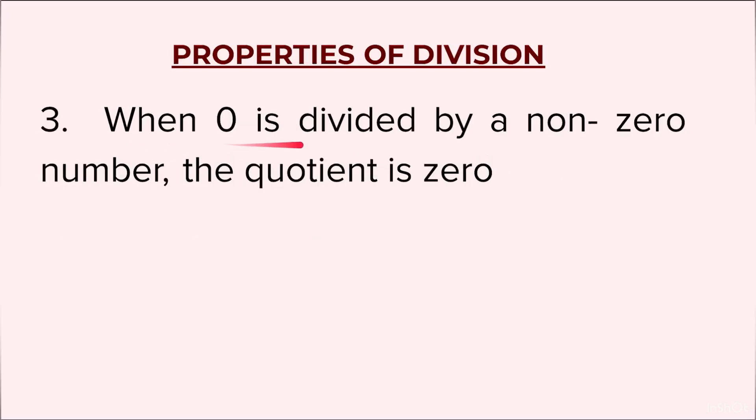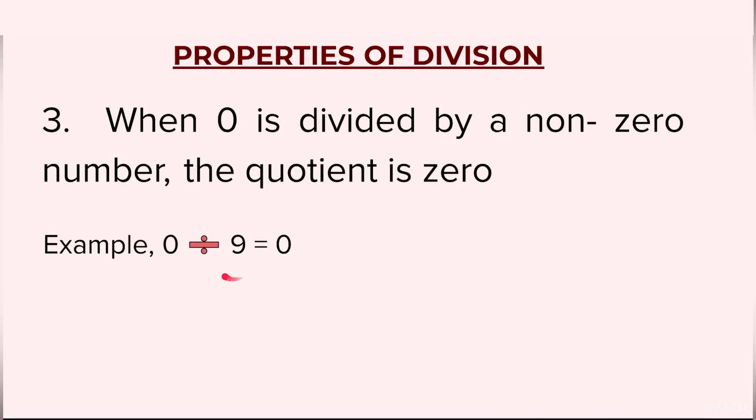Third property: when 0 is divided by a non-zero number, the quotient is 0. Example: 0 divided by 9 is equal to 0. If the dividend is 0, the divisor could be any number. We will always get 0 as the quotient. We could have 0 divided by 7, 0 divided by 18. Every time, the quotient would be 0.